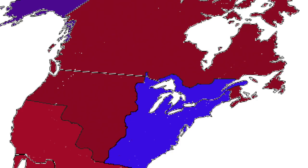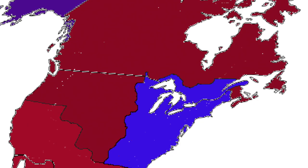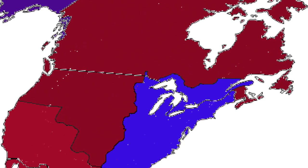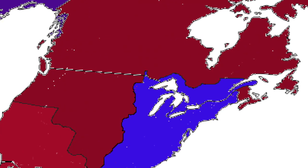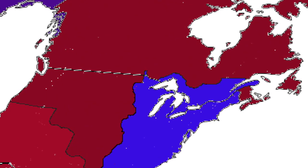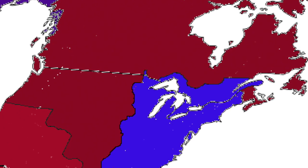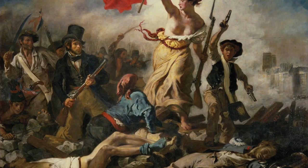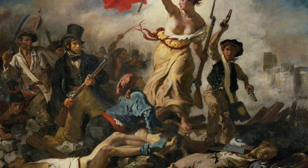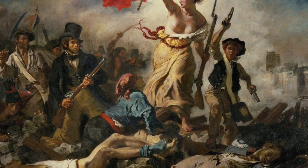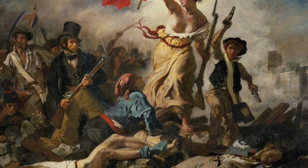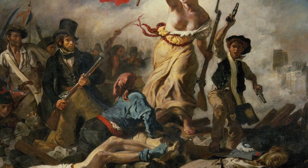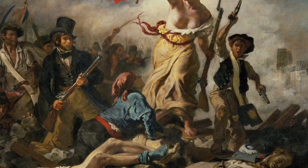In 1825, Rupert's Land is conquered by the United Kingdom, giving it access to the Pacific, while in 1829, Western Australia is conquered as well by the United Kingdom. In 1830, de la Croix paints his iconic Liberty Leading the People, a classic example of Romantic art depicting the revolution that created the new Roman Republic.